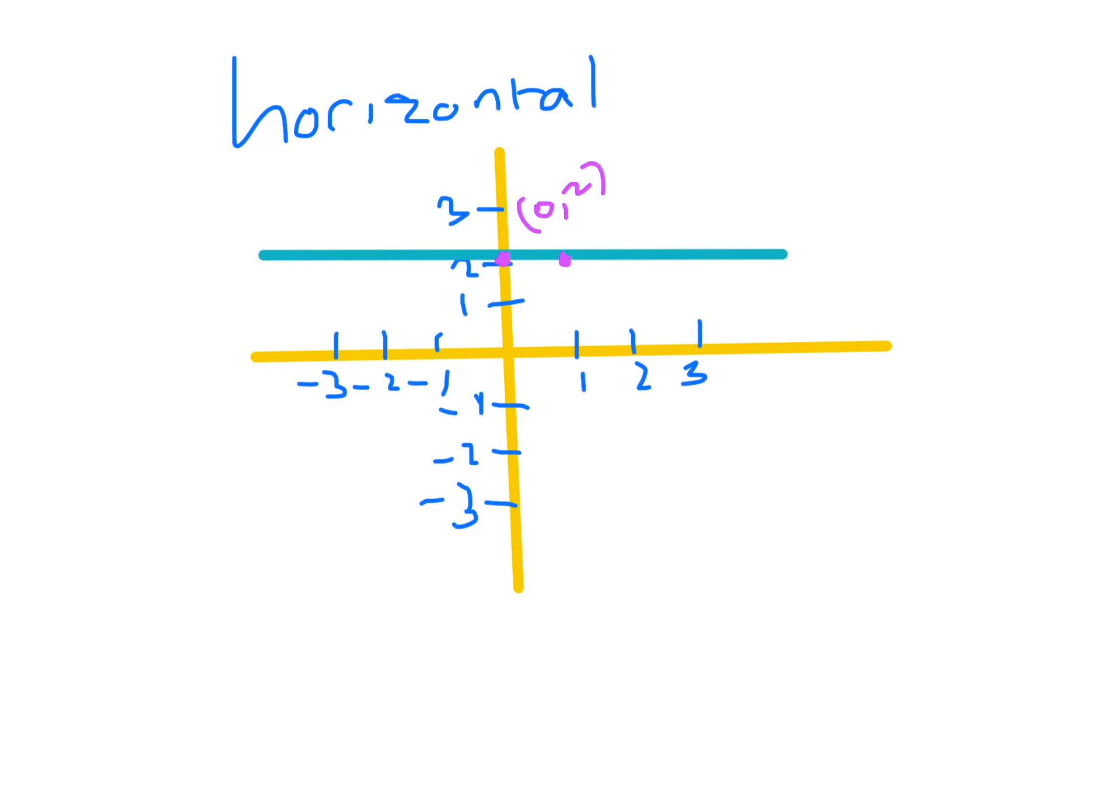If you look at this one here, you go across one and you go up two. The next one would be across two and up two. The next one would be across three and up two.